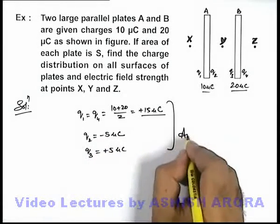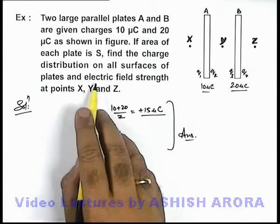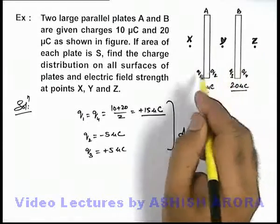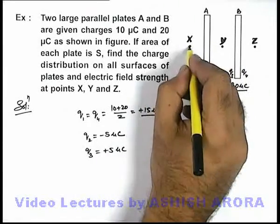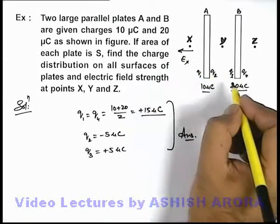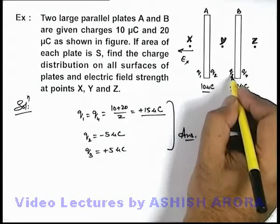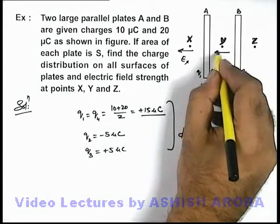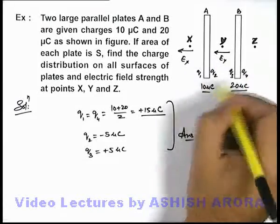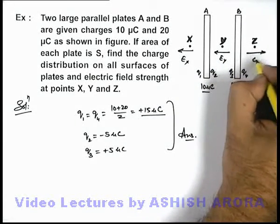These are the answers to the first part of the problem. We are also required to find the electric field strength at points X, Y, and Z. As Q1 is positive, the electric field at point X will be toward the left. In between the 2 plates, as Q3 is positive and Q2 is negative, the electric field at point Y will again be in the leftward direction. As Q4 is positive, Ez will be in the rightward direction.